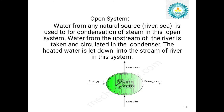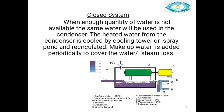That water is again sent to the boiler with the help of the feed water pump. In the closed system of condenser, a coil is arranged inside the condenser. Cooling water is circulated through the coil, and the vapor flows externally. Heat transfer takes place as the cooling water absorbs heat from the vapor. The condensed liquid is sent to the boiler with the help of the feed water pump, while the cooling water is recirculated. After the cooling water is discharged from the condenser, it is sent to the cooling tower and again continuously recirculated.